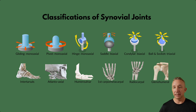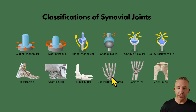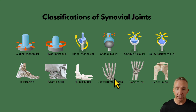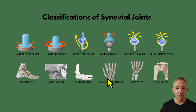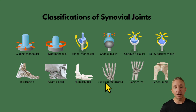A saddle joint moves on two planes, making it biaxial. The example we use is the thumb — when we talk about opposable thumbs, opposition and reposition. Two bones fit together like sitting on a saddle, like you're sitting on a horse. This is the first carpal to the first metacarpal, right at the base of the thumb. The palm can move on two planes with the thumb: up and back, and side to side. This is why it's called a saddle joint, and it's important when we talk about grasping.